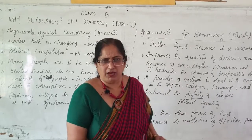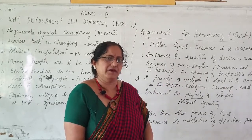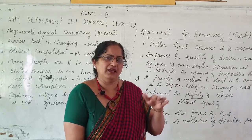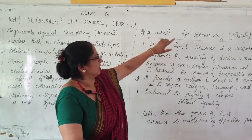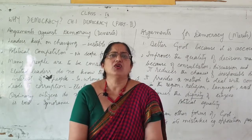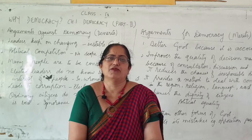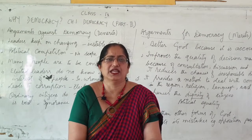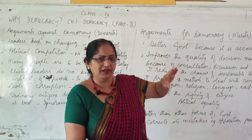Now, apart from demerits, democracy also has merits. That is why countries have chosen the democratic form of government rather than aristocracy or other forms. The first argument for democracy: it is a better form of government because it is accountable. It is accountable to the people — people are voting, and so directly and indirectly the government is responsible to the people. If they do not satisfy the needs of the people, they will not get elected a second time.